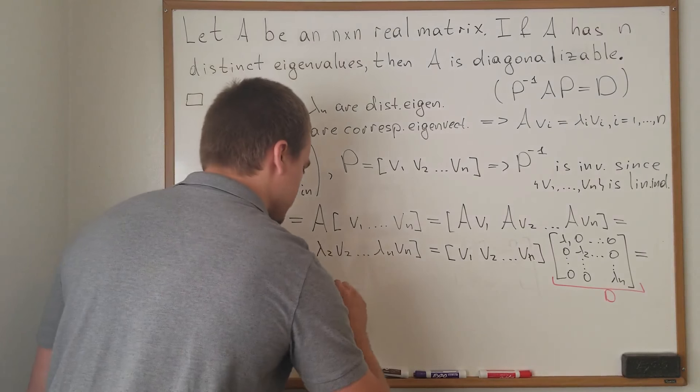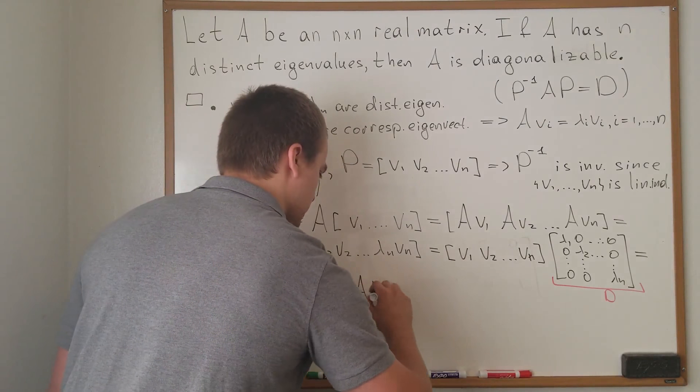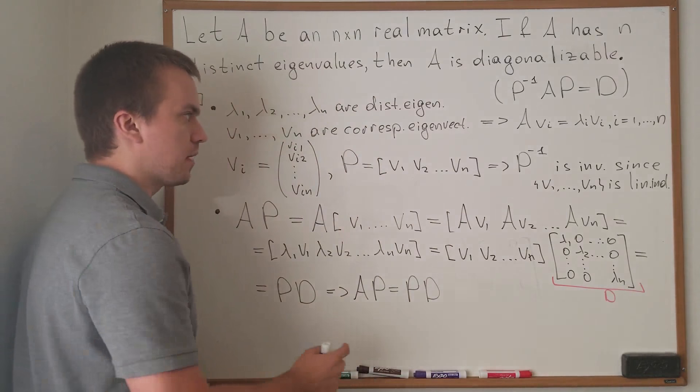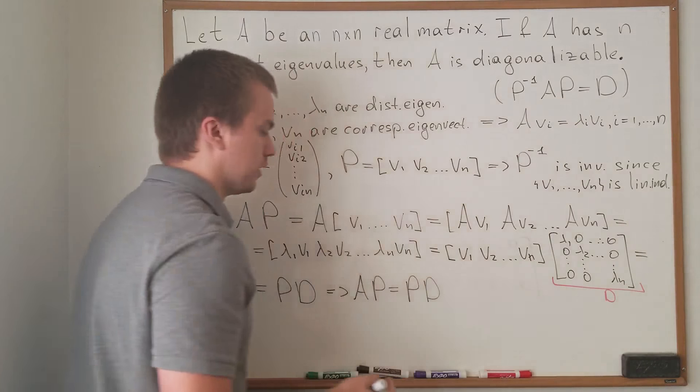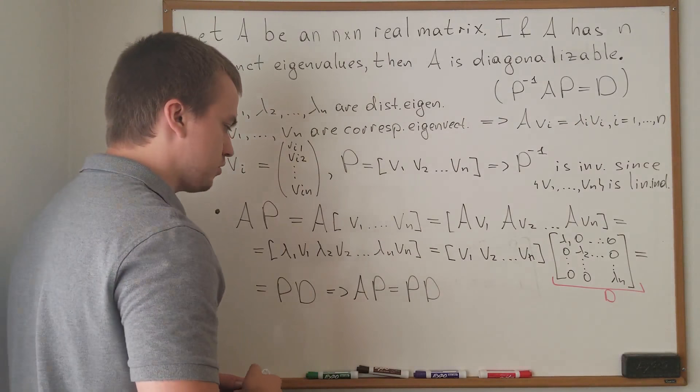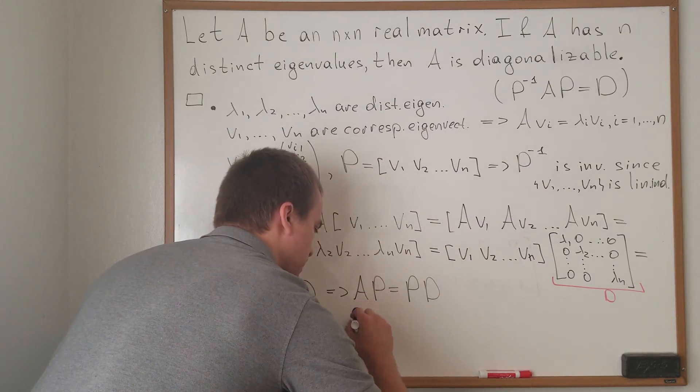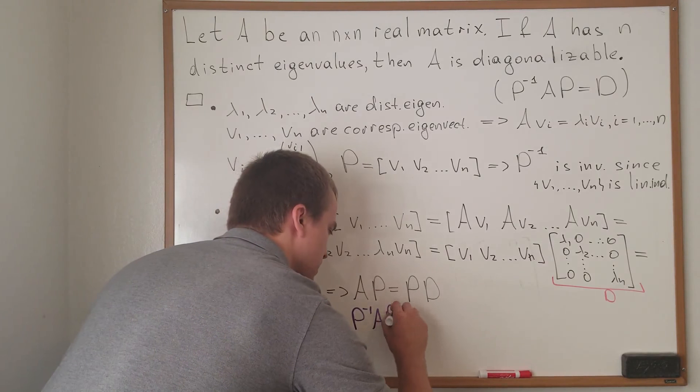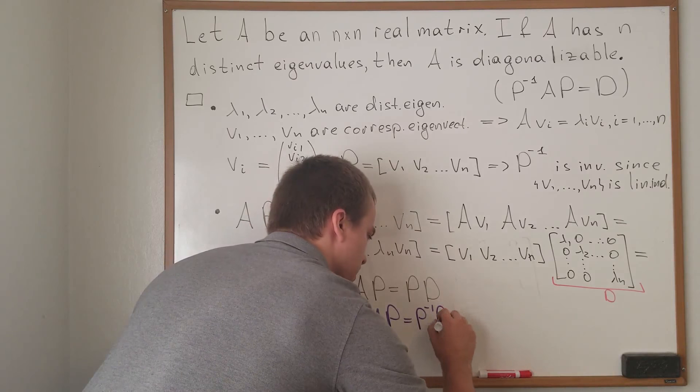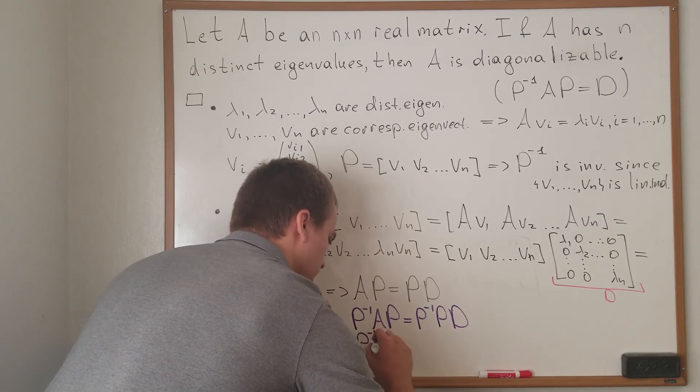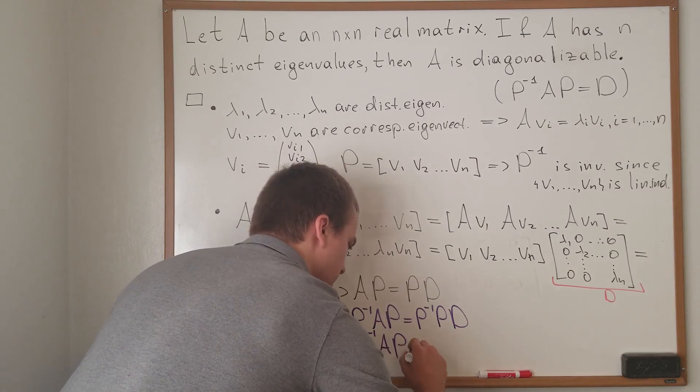So from this step, I got that AP equals P D. And I almost got this formula. The only thing that I need to do is multiply by P inverse from both sides. So we'll have P inverse AP equals P inverse P times D. From here, I'm going to follow that P inverse AP equals D.